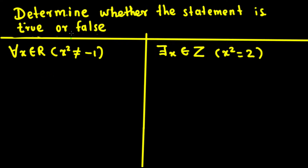Let's look at this problem right here. This question is asking us to determine whether the statement is true or false. For all x belonging to the real numbers, x squared is not equal to negative one. Now let's look at the cases.